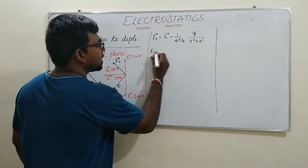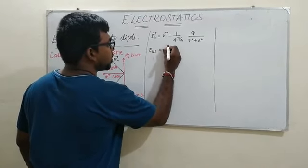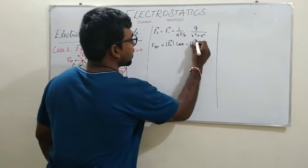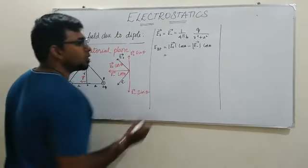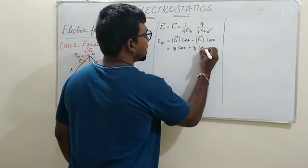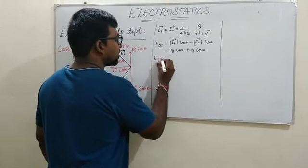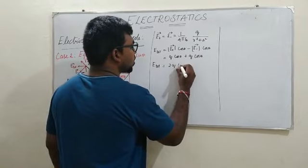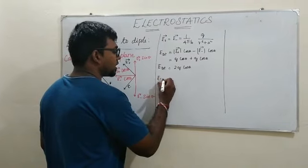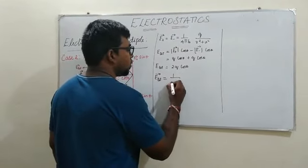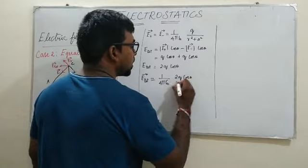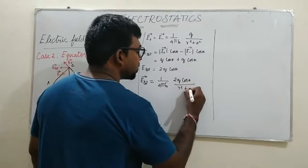So the total electric field E_total equals 2 · (1/4πε₀) · q/(r² + a²) · cosθ. Substituting, we get E_total vector equals (1/4πε₀) · 2q·cosθ / (r² + a²).